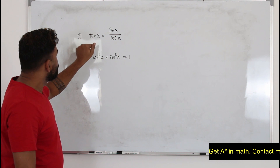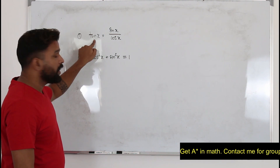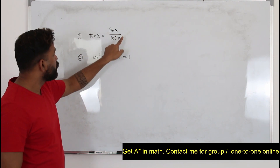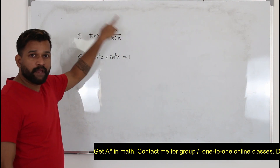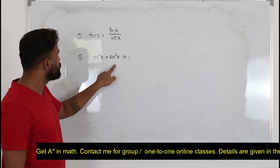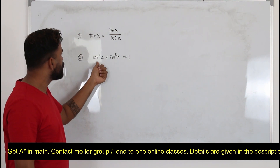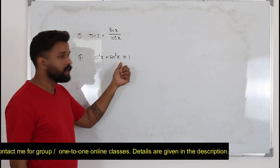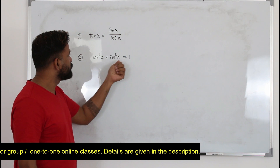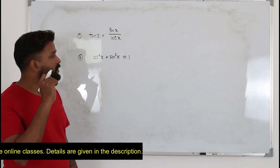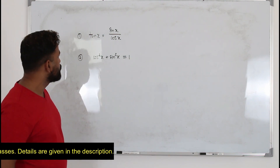That means if you have tan x you can replace it by sin over cos, or vice versa. Here also the same thing — when you have cos²x + sin²x you can replace it by 1. But there is something you need to understand here.